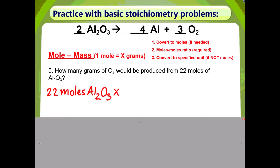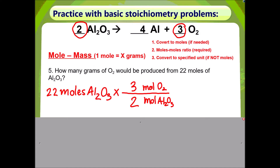I have already started by writing down the given. I already have moles, so I can skip Step 1 and go straight to Step 2. For this step, I am trying to go from aluminum oxide to O₂. Therefore, I will put aluminum oxide on the bottom so the unit can cancel out with the previous. The numbers come from the coefficients in the balanced equation.